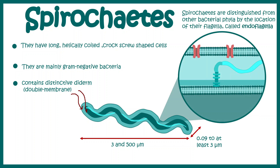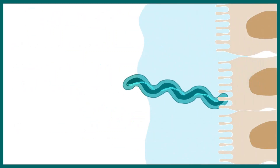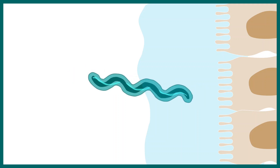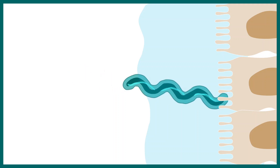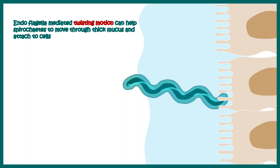Spirochetes are distinguished from other bacteria by their location of flagella, and this kind of flagella is known as endoflagella, which runs inside the bacterial membrane through the periplasmic space. This endoflagella allows the bacteria to undergo a twisting motion, which is really important while the bacteria is wading its way through thick mucus, thereby allowing it to attach to host cells. This kind of motion gives the spirochetes a nice pathogenicity.